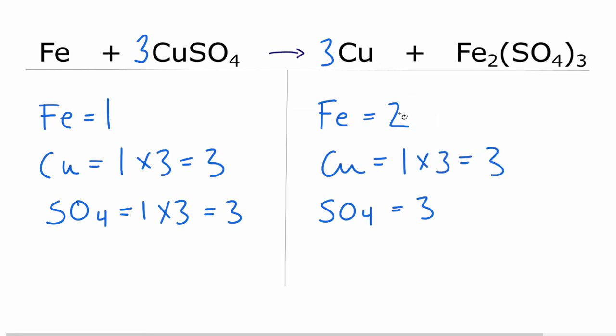And then we have two irons here, one iron here. Let's just put a two in front. So one times two, that equals two. And this equation is balanced. We have the same numbers on each side.